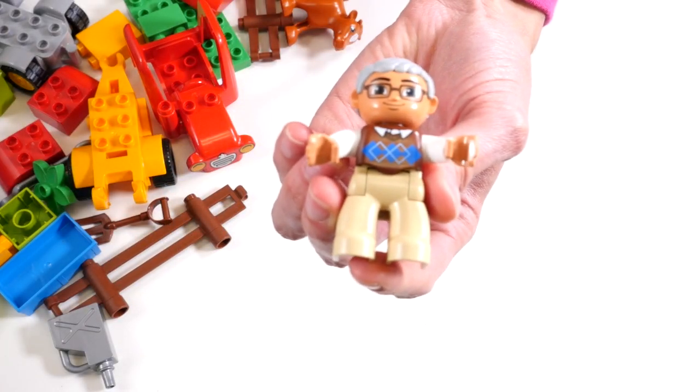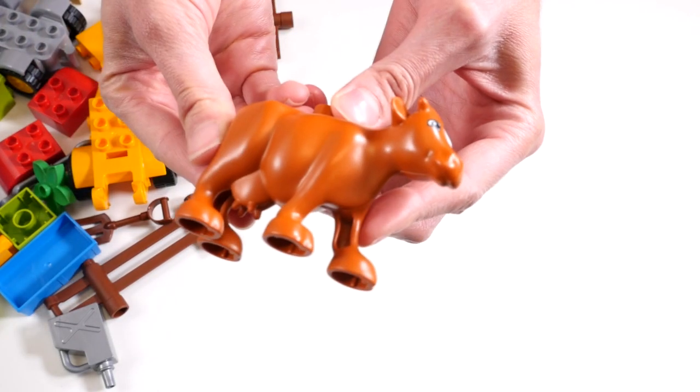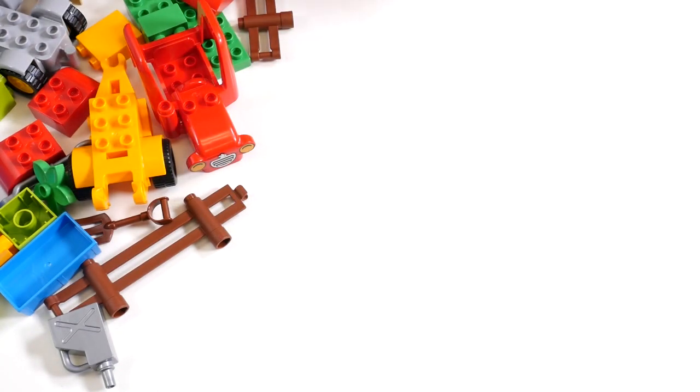This is a farmer. He's going to be seated on the tractor. This is a cow. Let's begin.